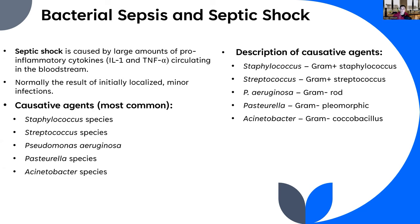Staphylococcus and Streptococcus are gram-positive. Pseudomonas aeruginosa is a gram-negative rod. Pasteurella species are gram-negative and pleomorphic — meaning they don't have a defined shape and can appear as rods, cocci, or elongated structures. Acinetobacter are gram-negative coccobacilli — still considered rods but shorter, looking almost like footballs.